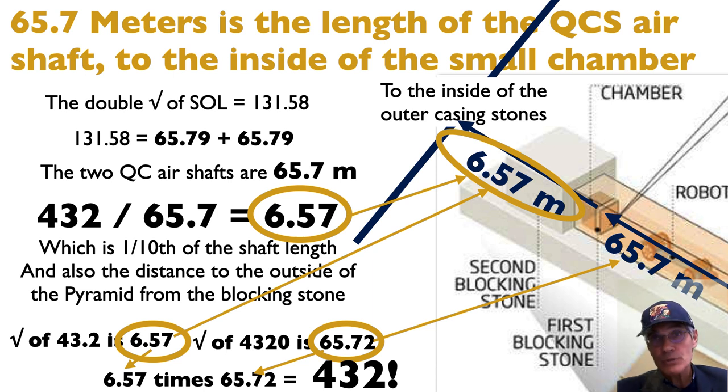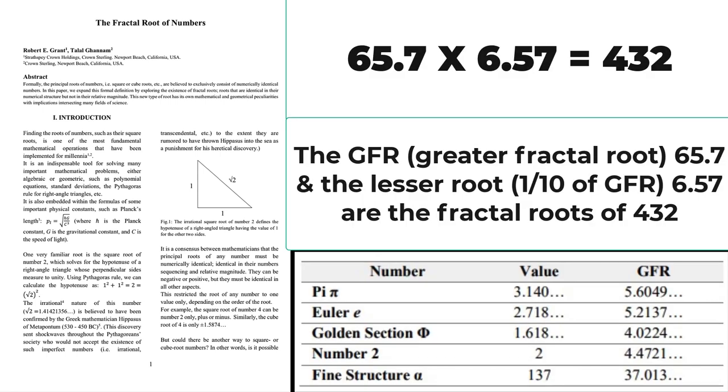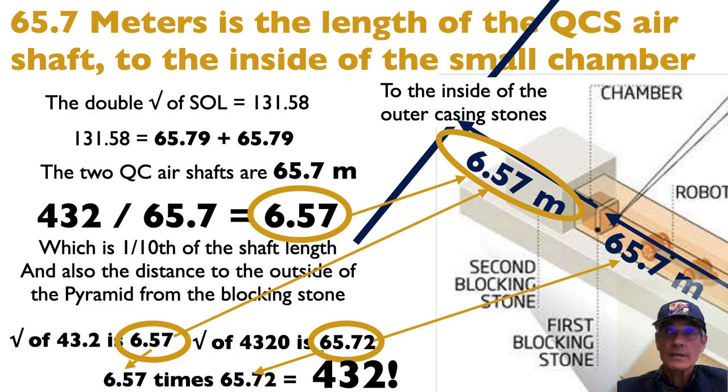432 is the fractal. Those are the fractal roots for 432. And he's written a paper with his colleague, a mathematician. And I'll put a link to his paper about fractal roots. Grant argues with his colleague, Talal Ghanem, in this paper, the fractal root of numbers, that this is a real class of numbers, just like square roots. So one common form of a fractal is there's a greater fractal root and a lesser fractal root, which is always one-tenth. And so we found that with 432. These distances the air shaft, 65.7, and one-tenth of it, 6.57, when multiplied, yield 432. And look at the other numbers that have greater fractal roots: π, Euler, golden section, number 2, fine structure constant. Incredible.